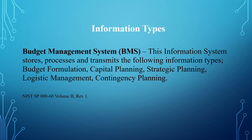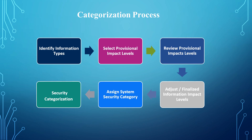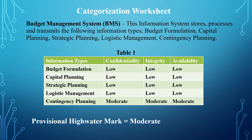This information system stores, processes, and transmits the following information types: budget formulation, capital planning, strategic planning, logistic management, and contingency planning. In selecting the provisional impact level, you have to identify these information types, then determine the impact level to each of the security objectives.